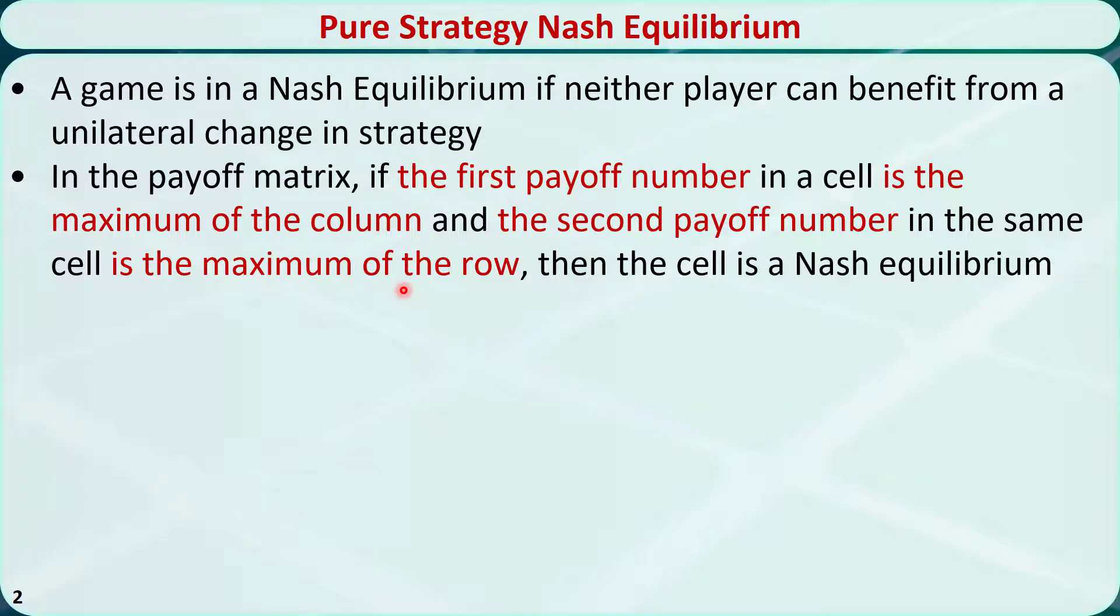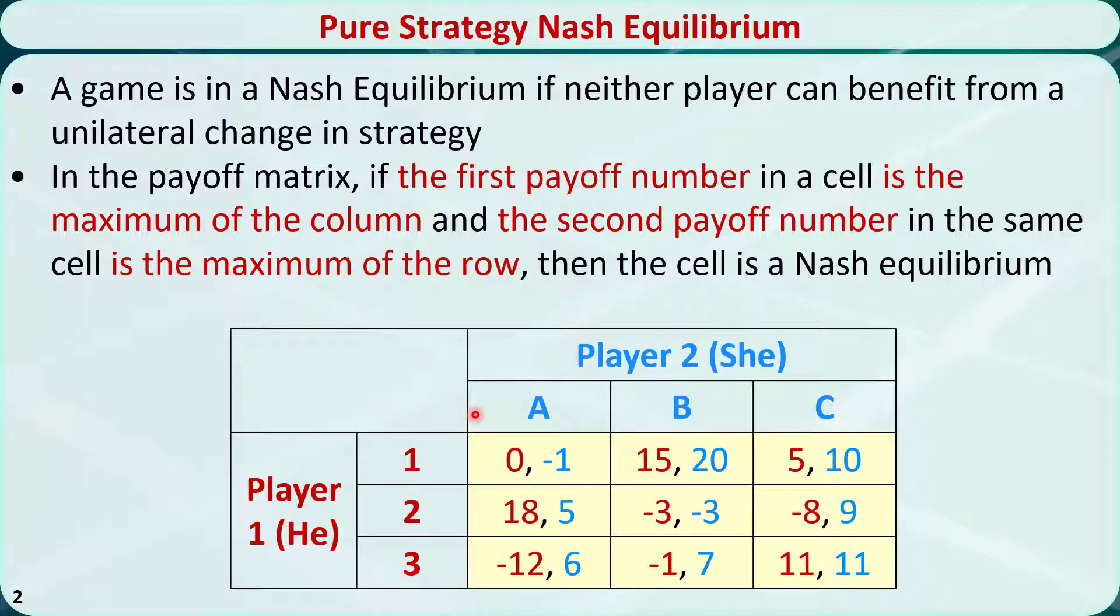Let's try this method on this 3x3 matrix. The maximum number of player 1's payoff in the first column is 18. Let's check if player 2's payoff is the maximum of the row. Unfortunately, 5 is not the maximum number. So this cell is not an equilibrium.